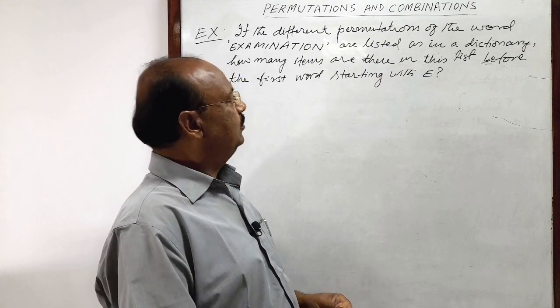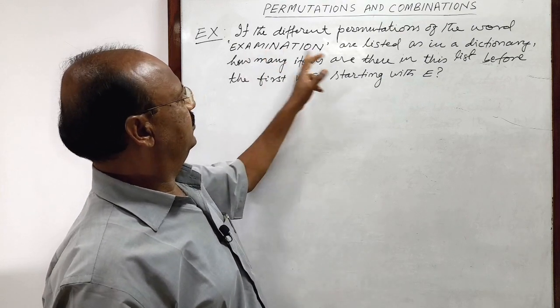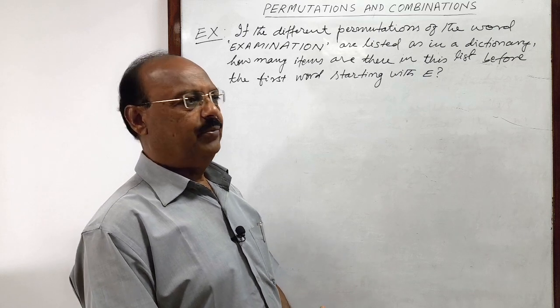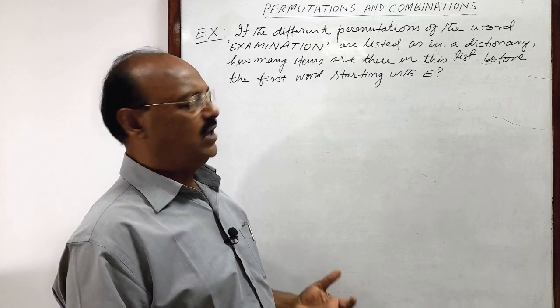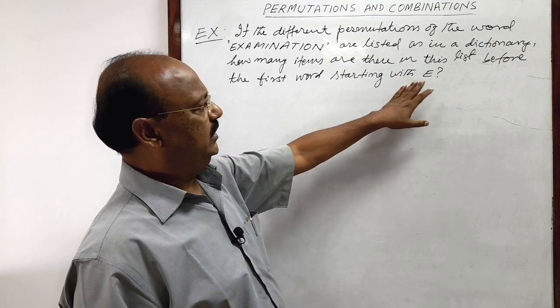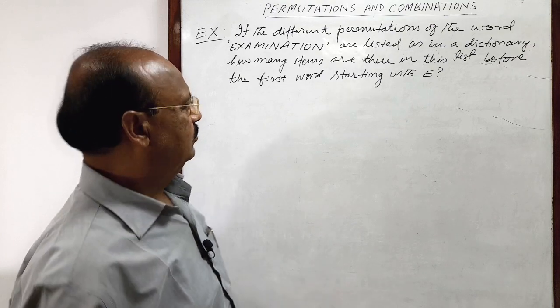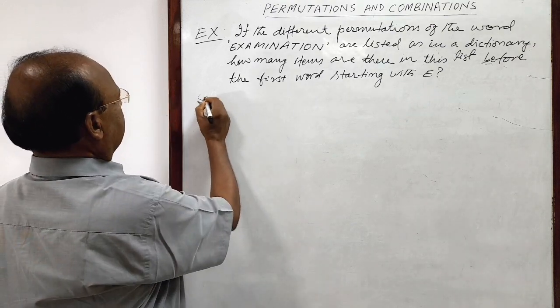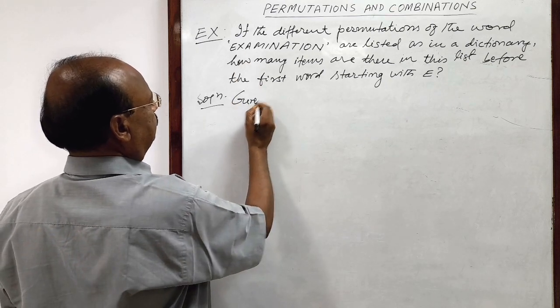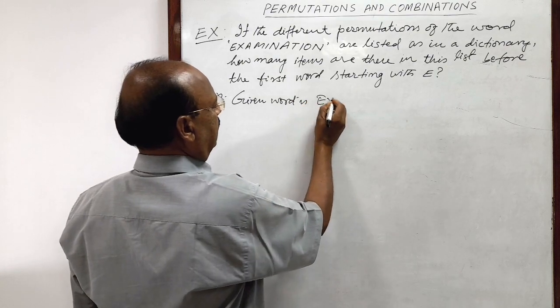Okay, so we have to arrange the words formed with the letters of this word examination according to dictionary, and we have to see how many words are there before starting with E. What are the different options for formation of words here? Let us see the solution. Here given what is examination, given what is examination.